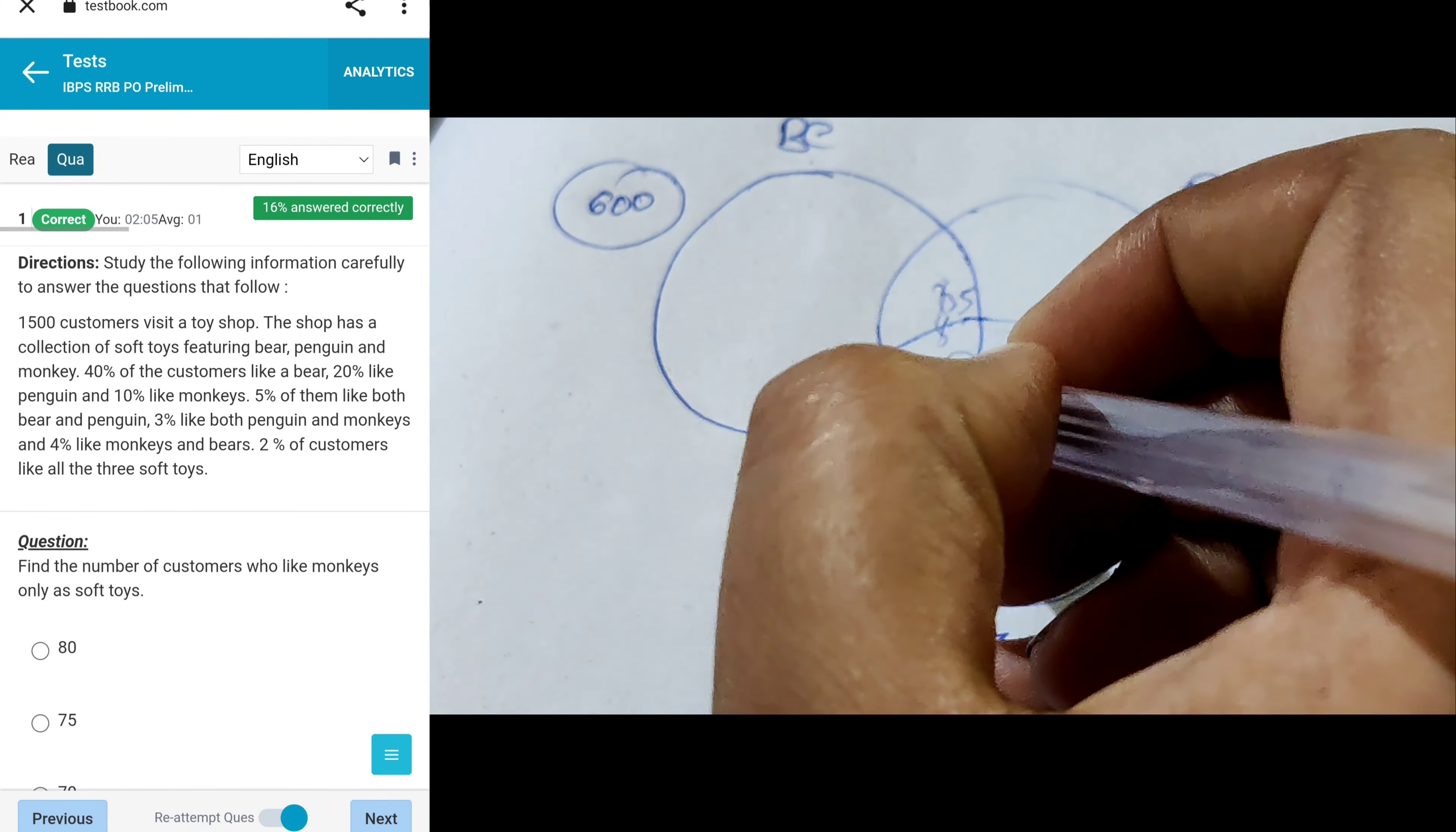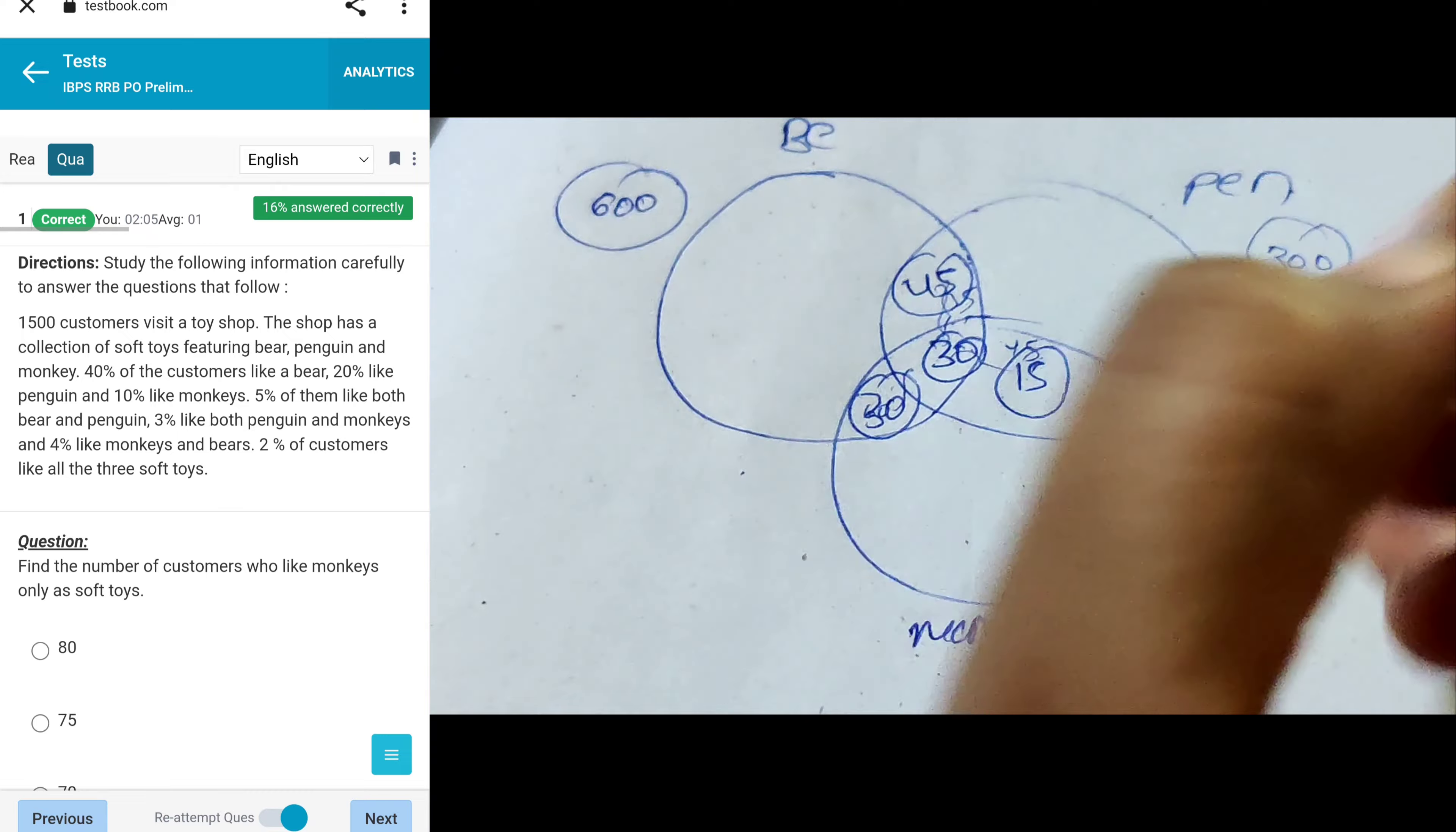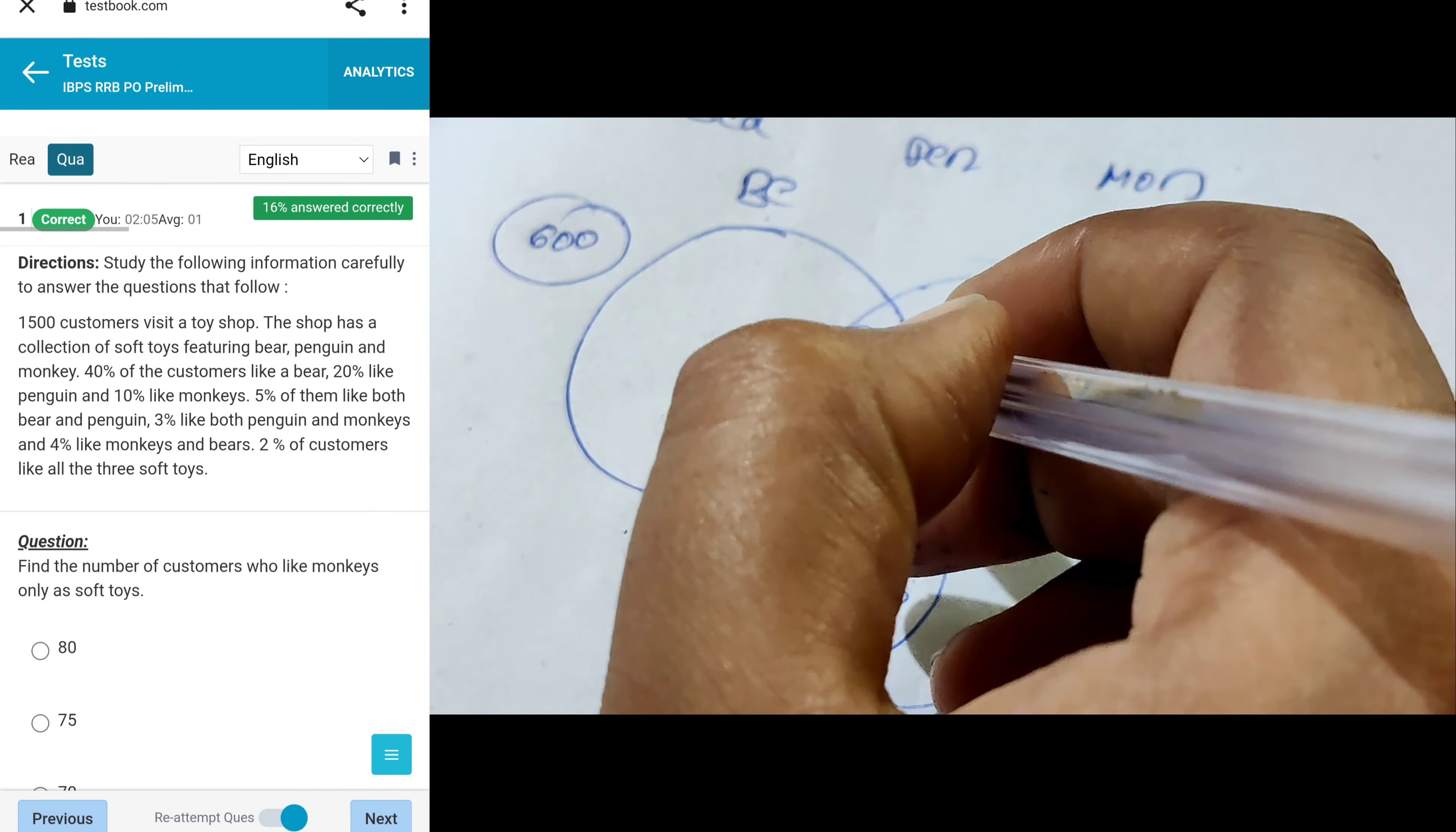4% like monkey and bear, that's 60. Next, 2% like all three, so 2% means 30. So 30 minus 75 gives 45, then 15, and again 30. So here total is 150, 60, 75, so again 75 and 45, 15, 60, 90, 210, and 60 and 40.